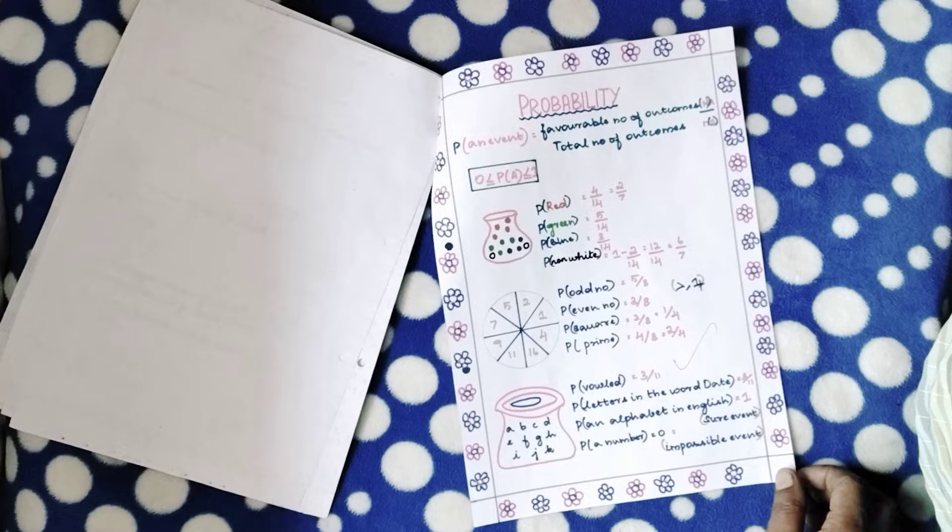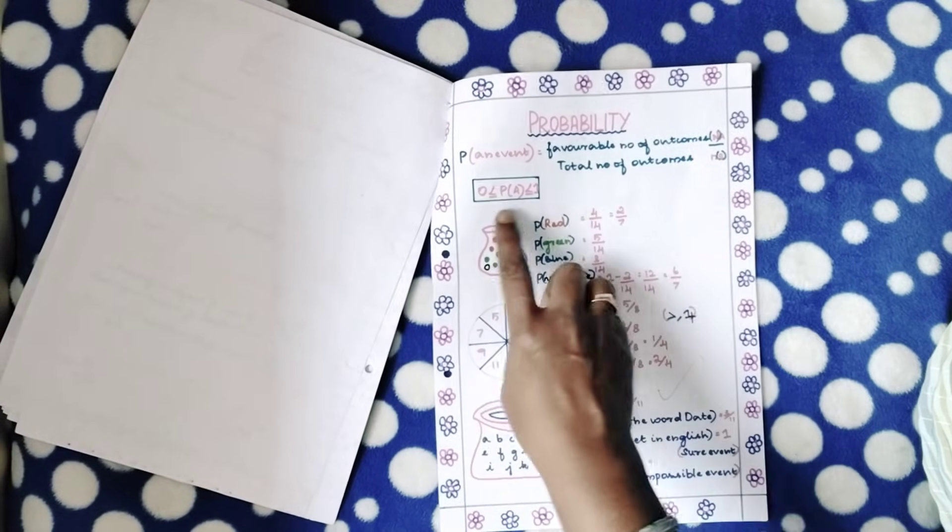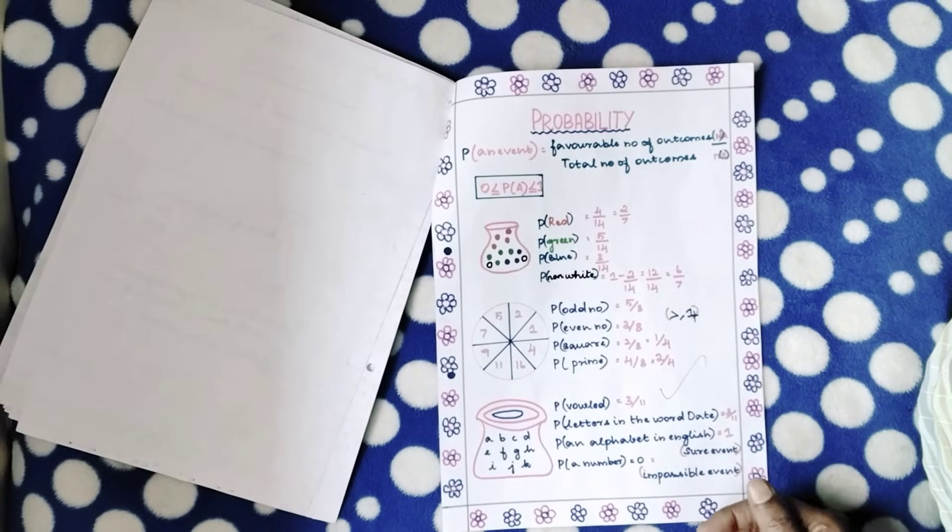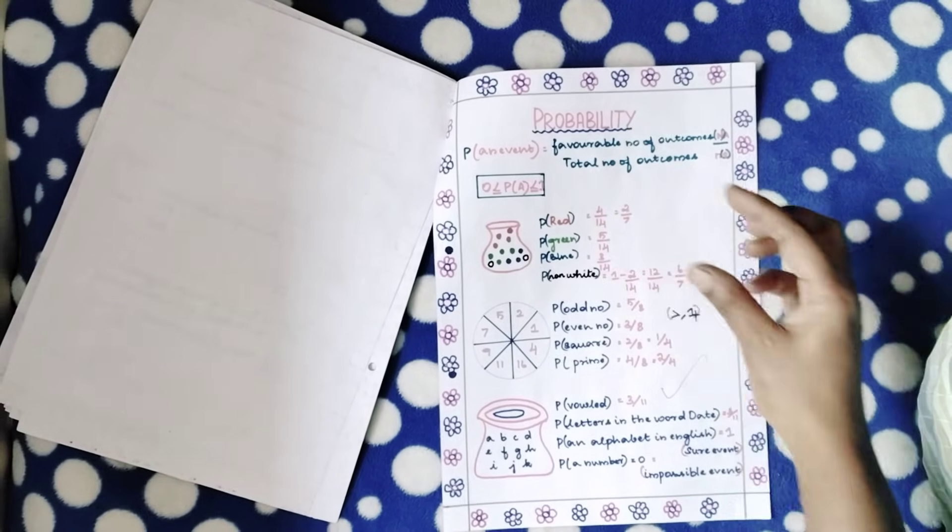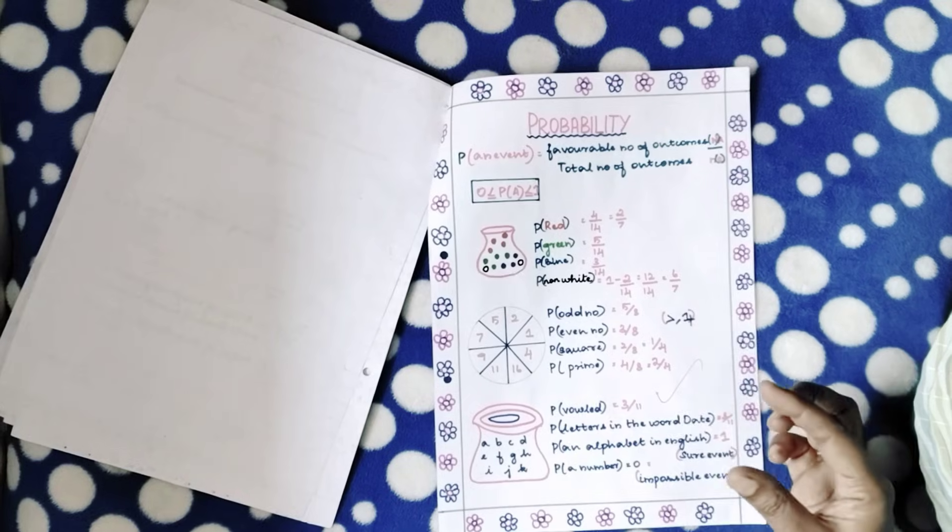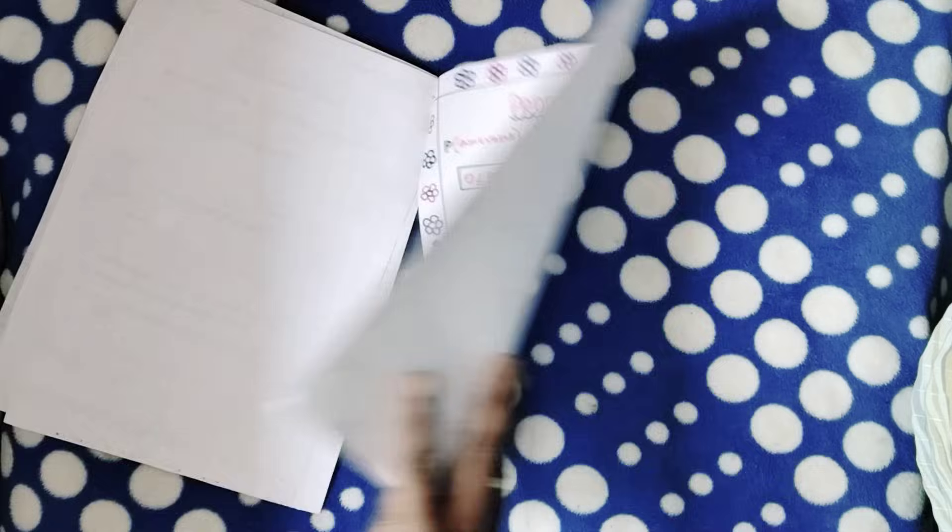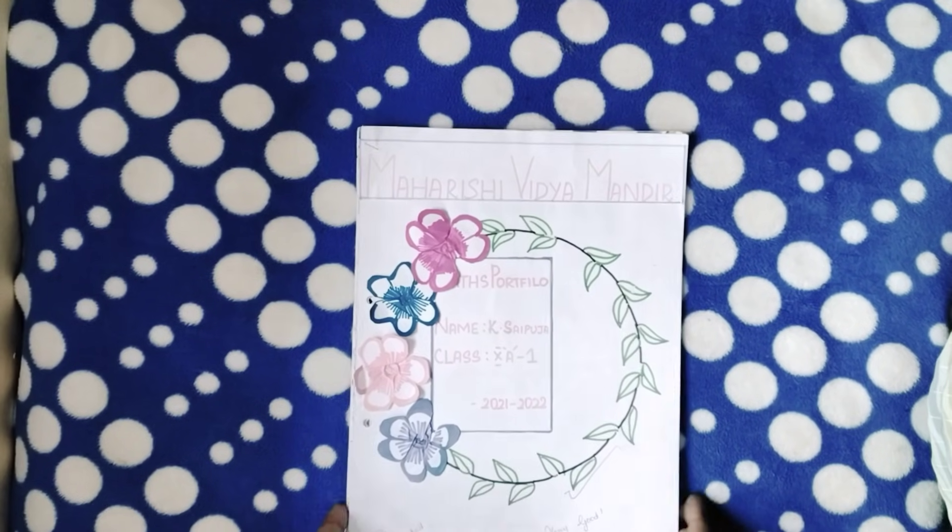And the last one she's done on probability. She's explained probability lies always between zero and one, and she's explained a simple probability sum with marbles, with a spinner, and with the letters that is being put inside a bag. So this is a simple portfolio that the child has done for class 10 term 1. Thank you so much.